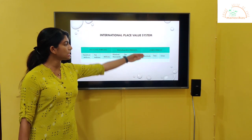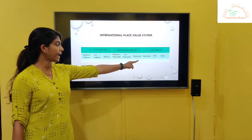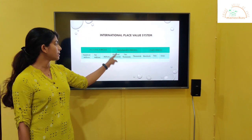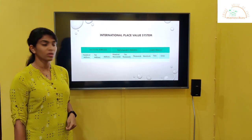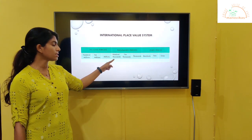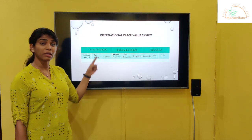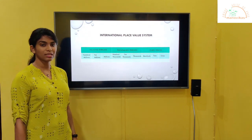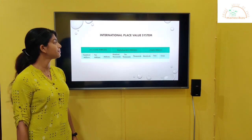In the ones period we have place values of ones, tens, and hundreds. In the thousands period we have place values of thousands, ten thousands, and hundred thousands. In the millions period the place values are millions, ten millions, and hundred millions.